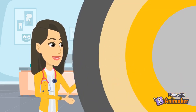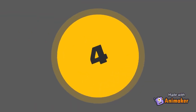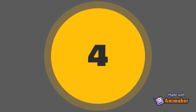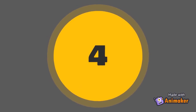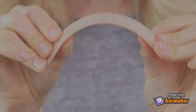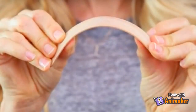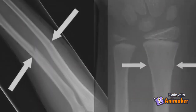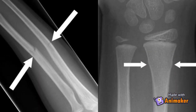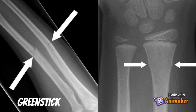Lastly, number four: children's bones are softer and pliable, meaning they bend and not so much break. Therefore, in children's x-rays you will see more greenstick and buckle fractures.